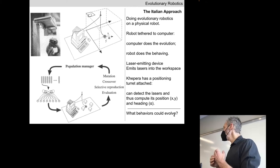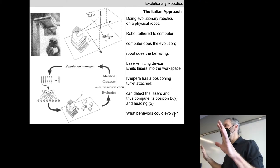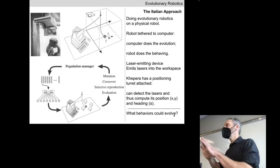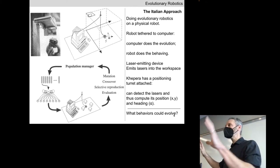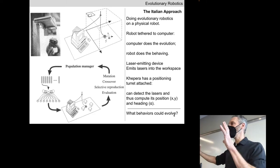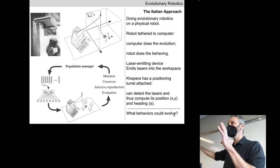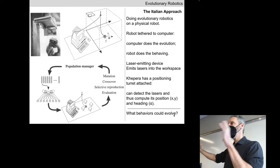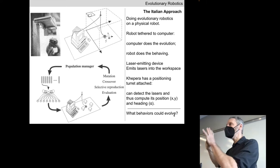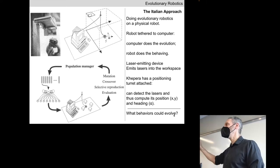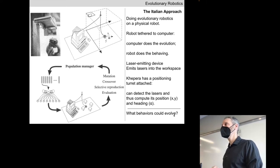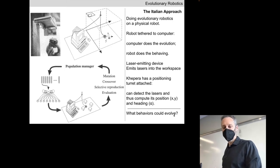These three numbers — X, Y, and heading — are information the evolutionary algorithm has. The evolutionary algorithm measures the fitness of a given neural network running on the robot as a function of its position and heading. The robot itself does not have access to this information; it works with data coming in through its own sensors. We're going to see this again and again: sometimes the evolutionary algorithm is looking from a distance and measuring the robot's behavior using information different from what the robot itself has.